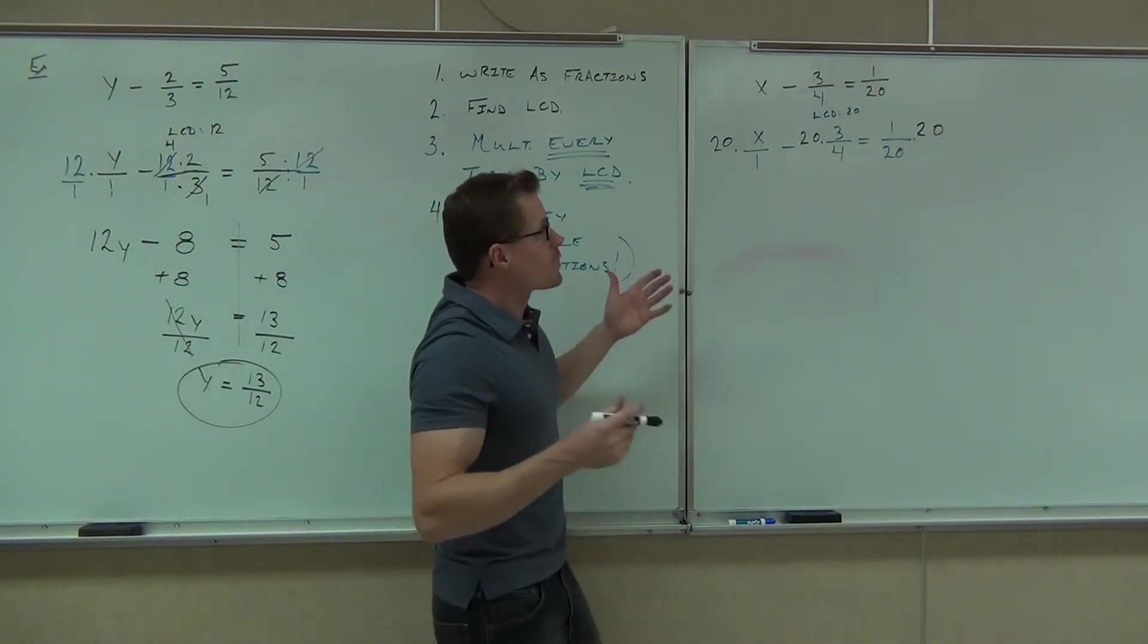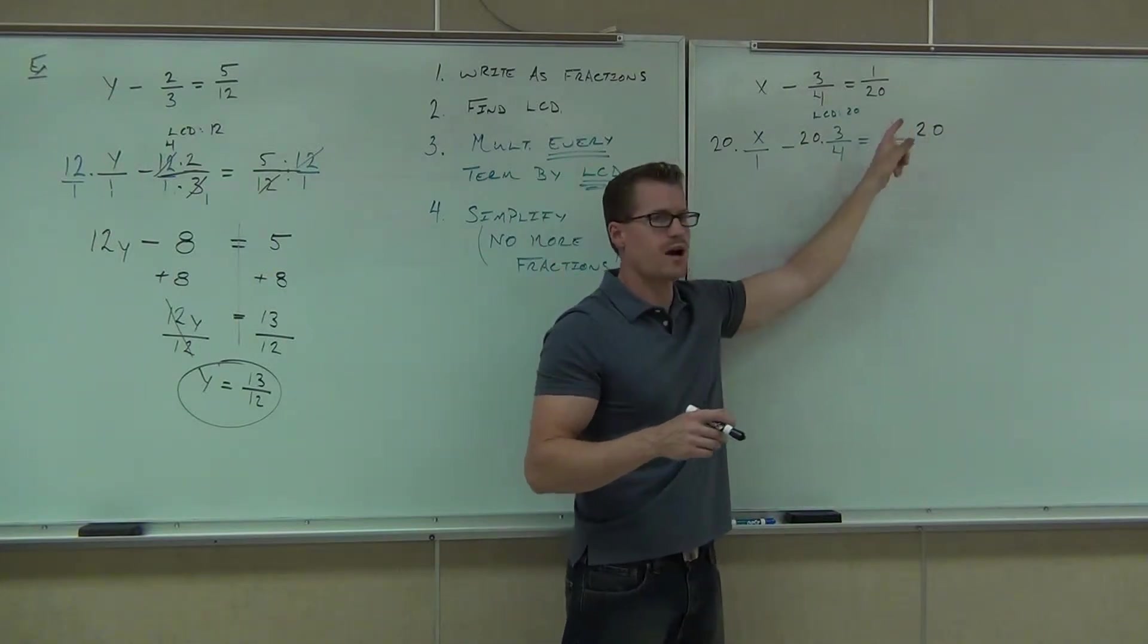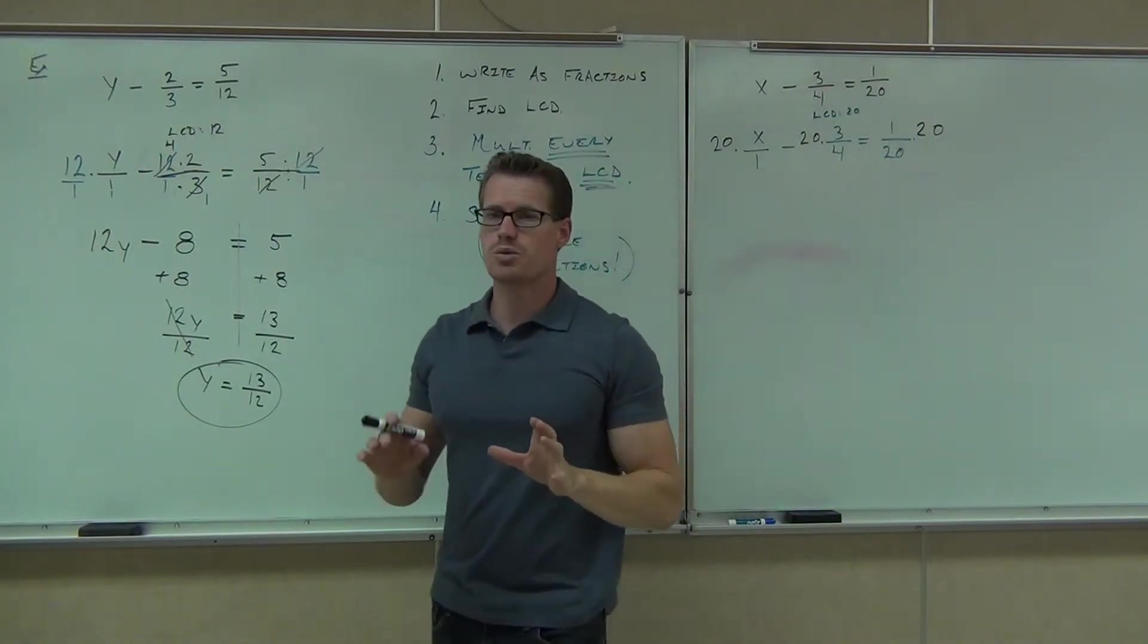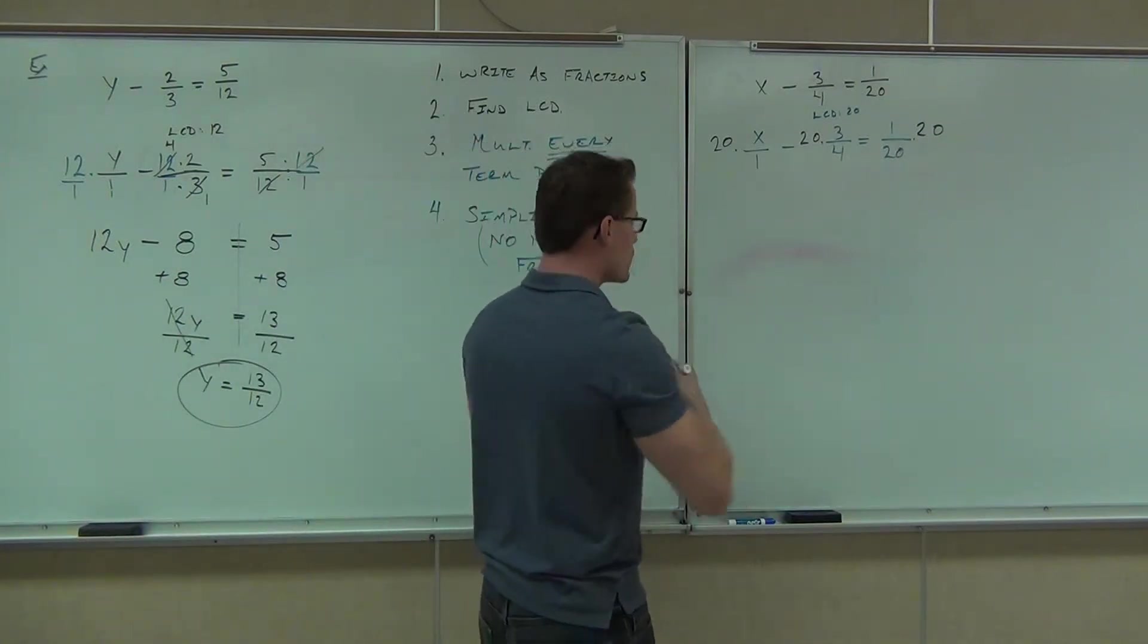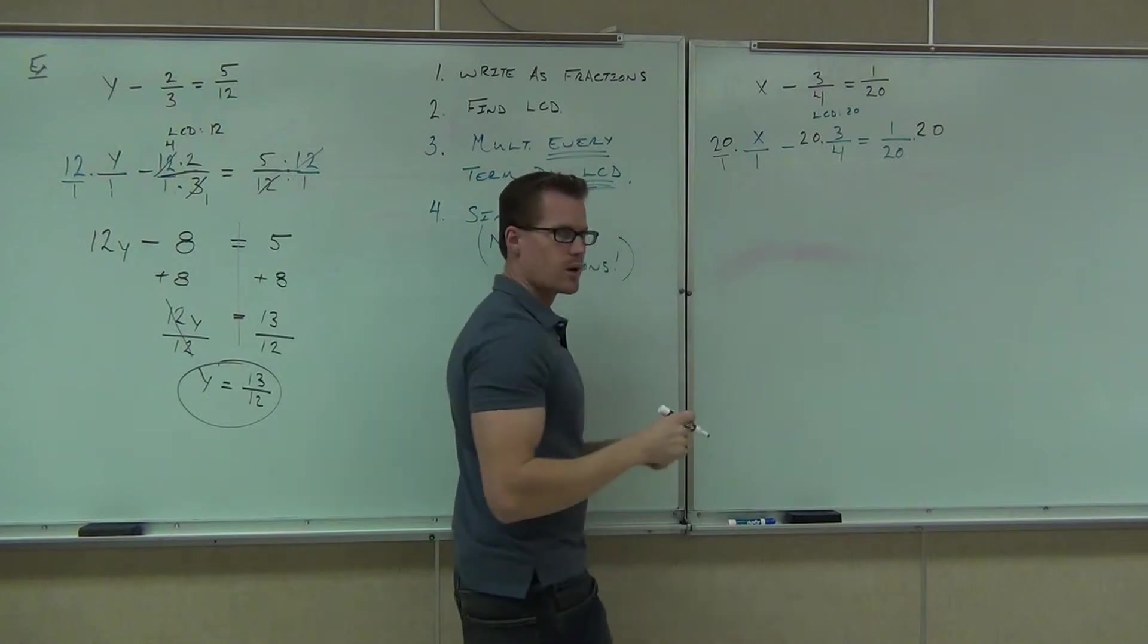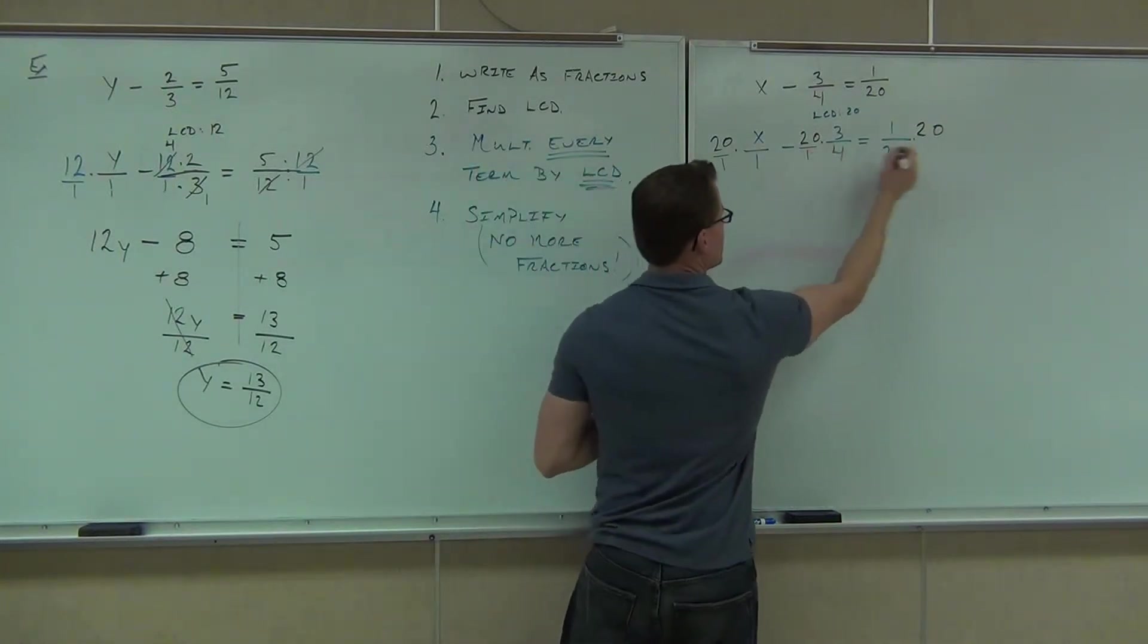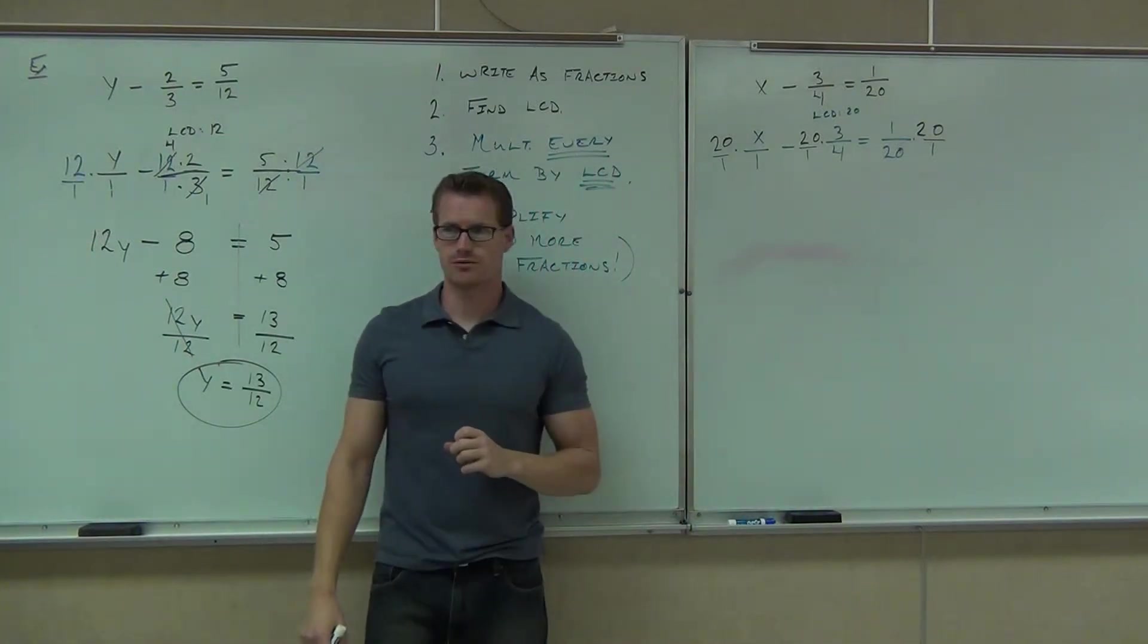Now, the next thing we're doing, of course, well, we get 20 times a fraction and 20 times a fraction and 20 times a fraction. What we do is we change those 20s into fractions themselves. That way we can multiply fractions together. So the only extra step here that we've got is just put that over 1. 20 is the same thing as 20 over 1. And here. And here. Are you okay with that so far?